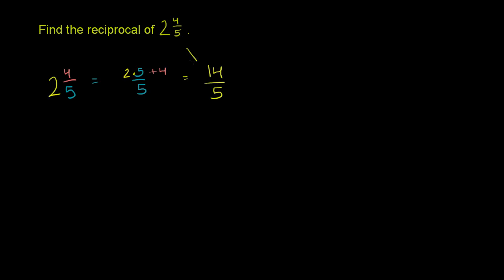So these are equivalent fractions. This is written as a mixed number. This is written as an improper fraction. It's improper because the numerator is bigger than the denominator. Now we want to find the reciprocal. When you find the reciprocal, you just switch the numerator and the denominator. You just flip the fraction.